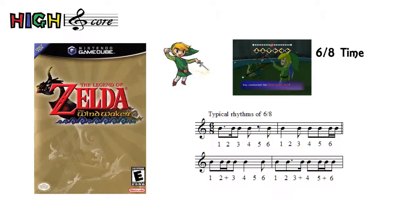6/8 time, to those of you who are mathematically attentive, might seem a touch redundant. After all, if this were mere fractions, you'd simplify that to 3/4. Well, there's a reason for that. In 6/8 time, there are six eighth notes per measure, and the eighth notes will usually appear in triplets — da-da-da, da-da-da. 6/8 time is commonly called march time, and you hear this in games a lot, too.